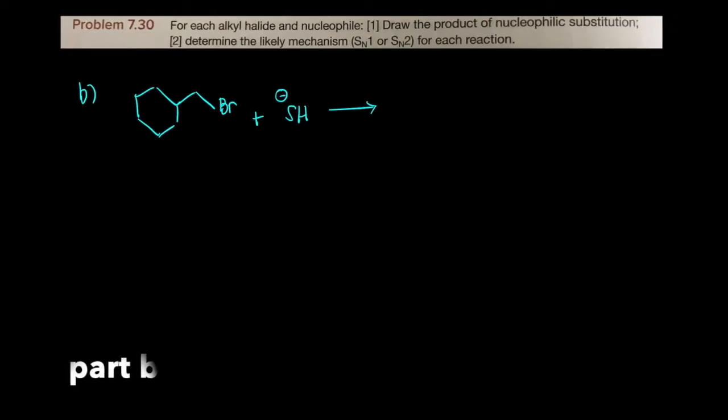In Part B we again want to decide what the products are. Here's our leaving group, and here's the alpha carbon, and we want to hook this guy up on that position, and what we'll get is the substituted product.